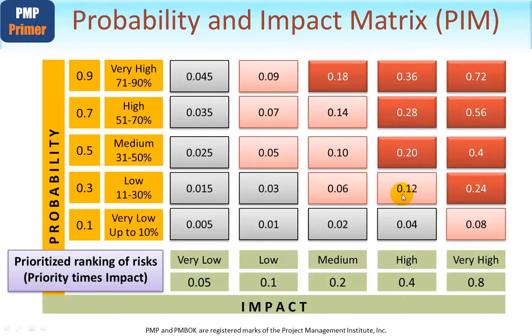Consider two weather-related risks: an 80% chance of rain and a 20% chance of heavy snow. If it rains, local roads will flood and travel will be slow; if it snows heavily, roads will be blocked entirely. Snow has a much higher impact, but only a 20% probability versus 80% for rain. Multiplying the two figures together for each gives a common metric to rank and prioritize both risks and allocate appropriate resources.